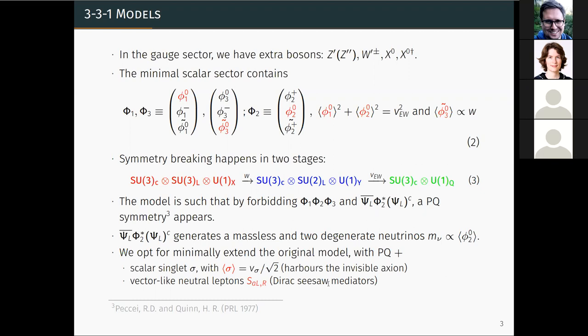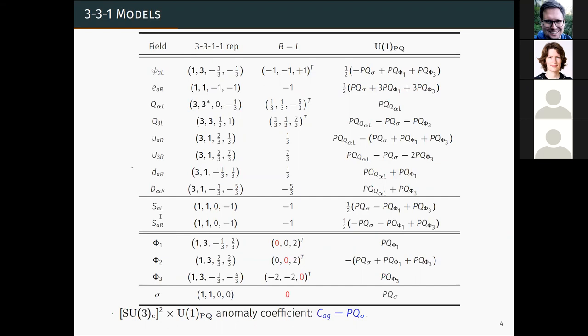So how do we do that? We do in the minimal way by extending the model with a scalar singlet, sigma, that gets a VEV at a very large energy scale. And we host the axion as in the invisible axion scenarios that we know of, similar to them. And also we need to add a vector-like neutral fermions, which will help us with the generation of neutrino masses. They will be actually the mediators of neutrino masses as we show you later.